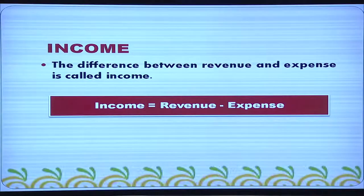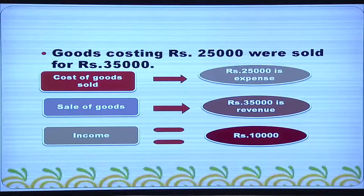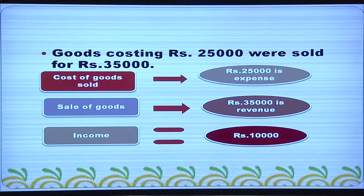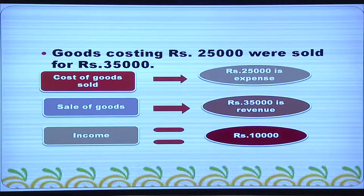Income is the difference between revenue and expense. Here is a transaction: goods costing rupees 25,000 were sold for rupees 35,000. The cost of goods sold is rupees 25,000 — that is the expense. Sale of goods is made for rupees 35,000 — that is the revenue. Income equals revenue minus expense, that is 35,000 minus 25,000, which is 10,000.